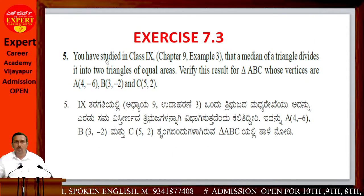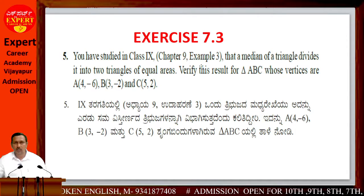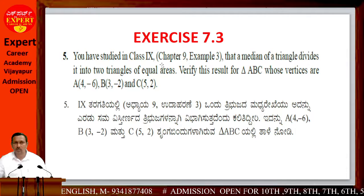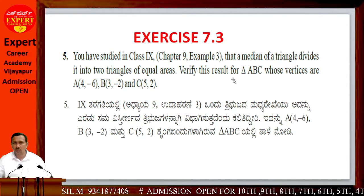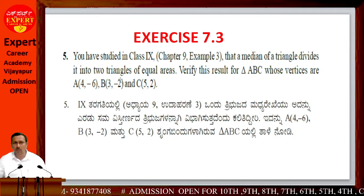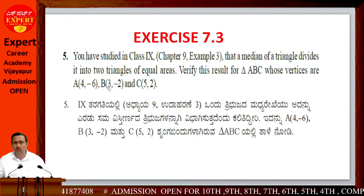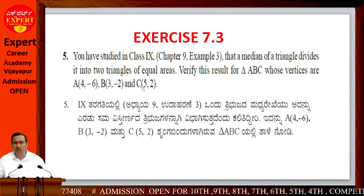You have studied in 9th class, Chapter 9, Example 3, that the median of a triangle divides it into two triangles of equal area. Verify this result for triangle ABC whose vertices are A(4,-6), B(3,-2), C(5,-2).